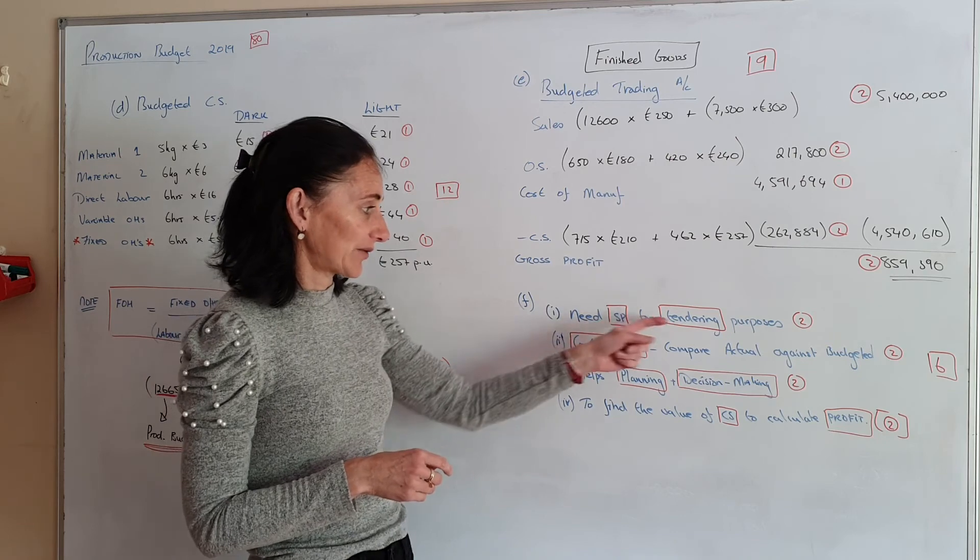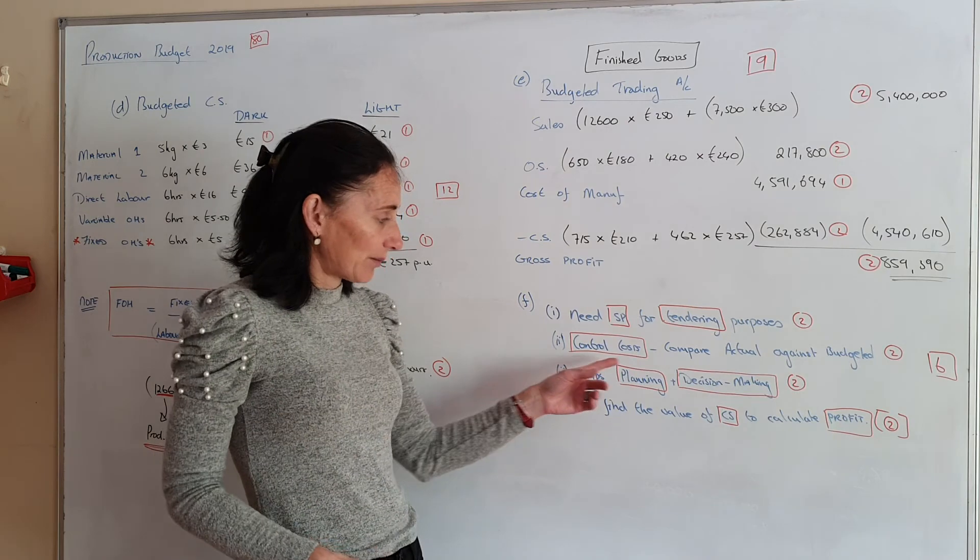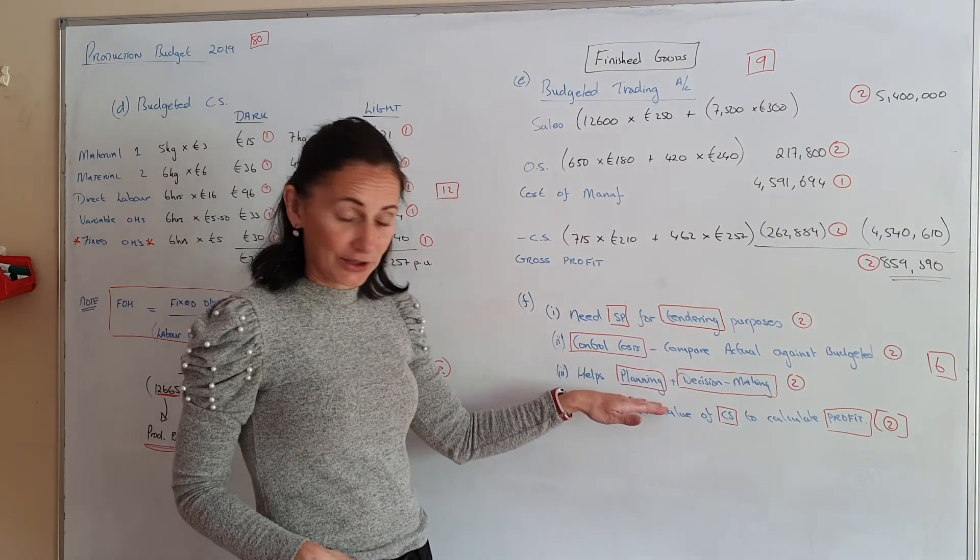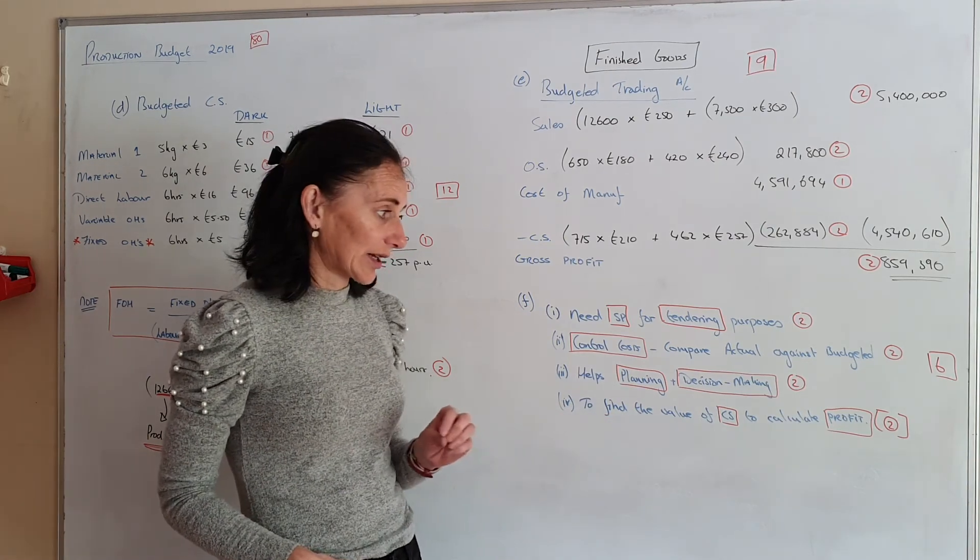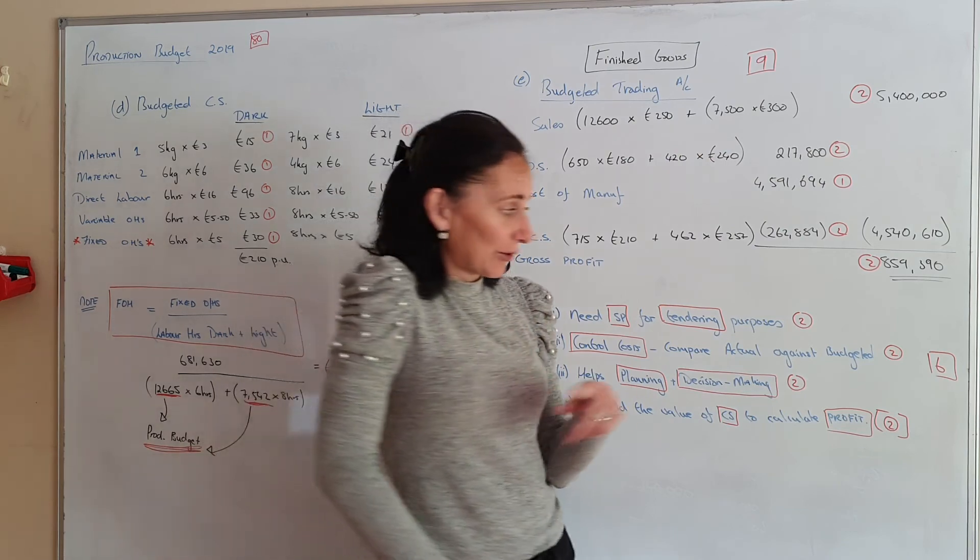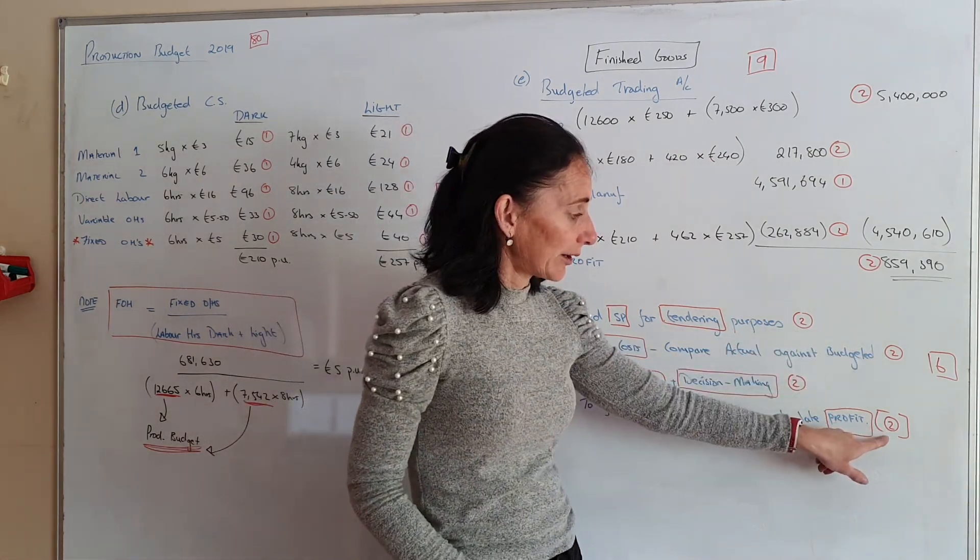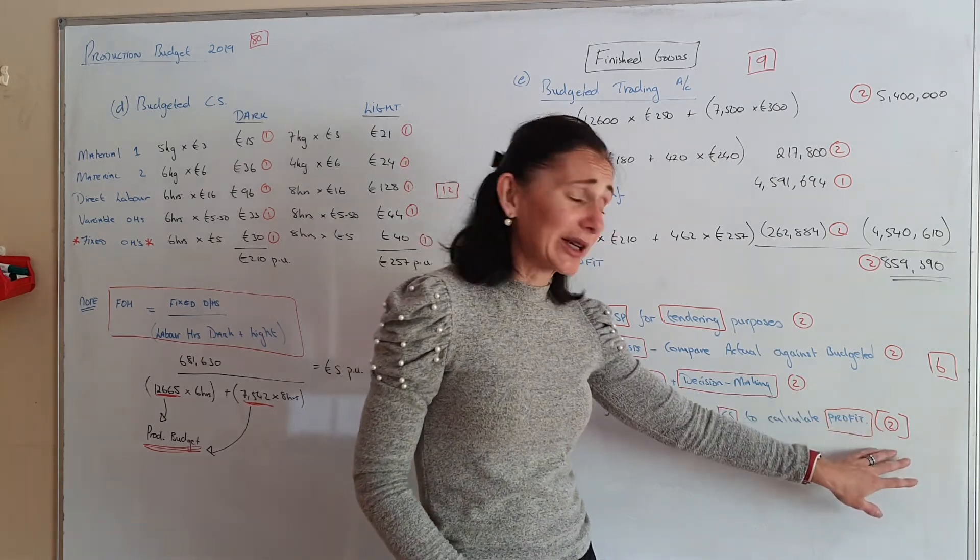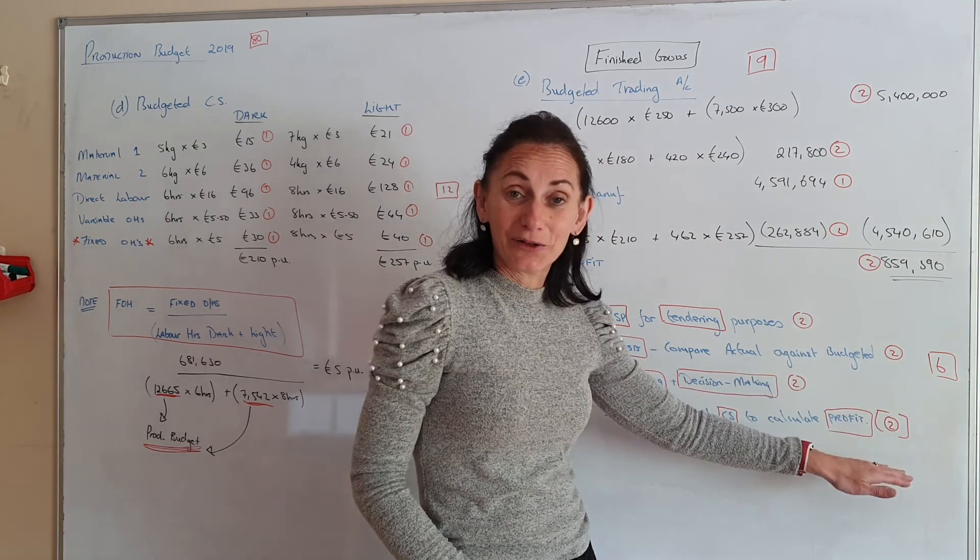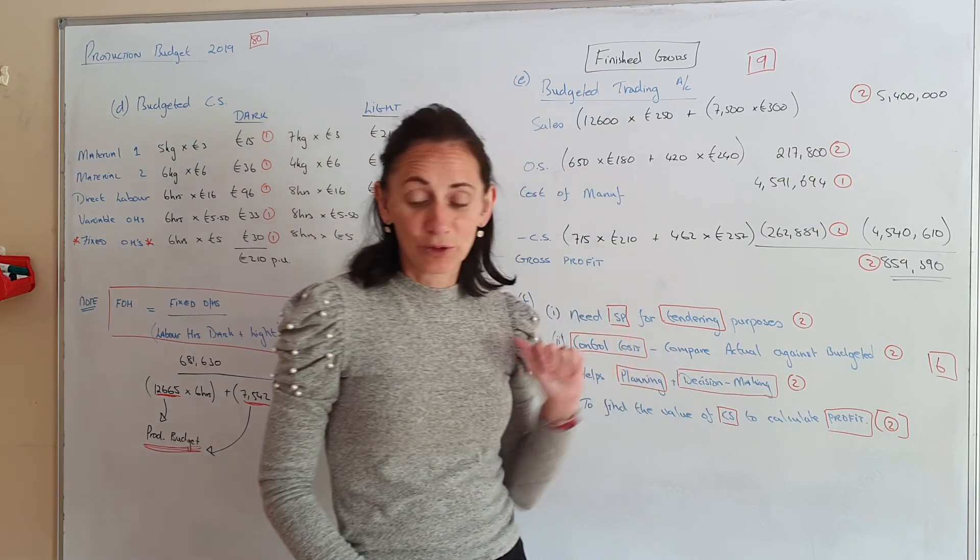You need your selling price for tendering. All costings are budgeting. We do it to control our costs. Compare actual against budgeted. All of them you can write helps planning and decision making. And find the value of closing stock to calculate profit. Now there's 6 marks but just for your own benefit to understand what I'm doing here. It's 2, 4, 6 and there's a 2 here but I've put square brackets around it. Square brackets around it means when you're marking. That answer is perfect but you've already given me enough to get full marks. So I'm not including that. It is right but I don't need to include it in the marks.